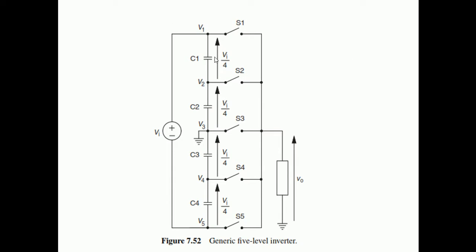We have various voltage levels — C1, C2, C3, C4 — giving us five voltage levels. So if we connect switch S1, we have voltage V1; when we connect S2, we have voltage V2; then S3 gives V3; then S4 gives V4; then S5 gives V5. This is the basic theme of a multilevel inverter.